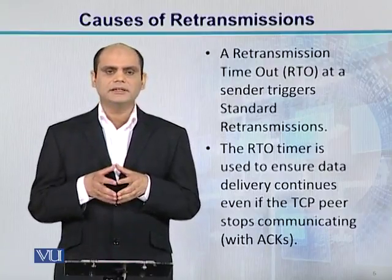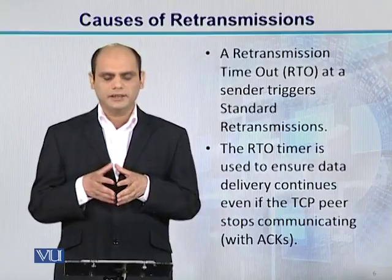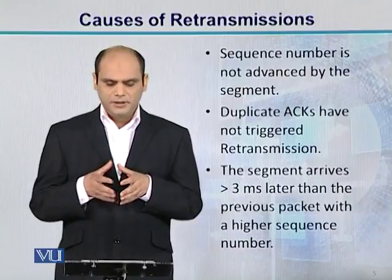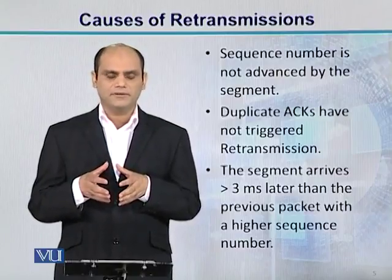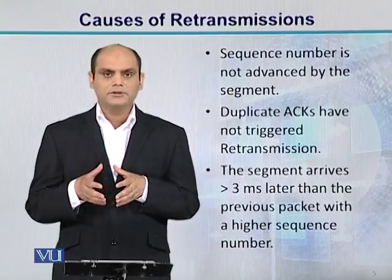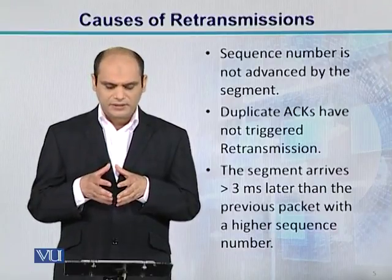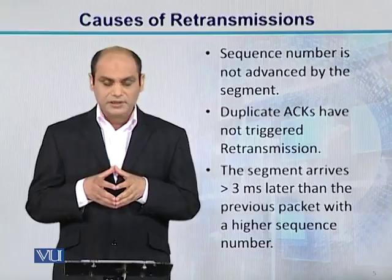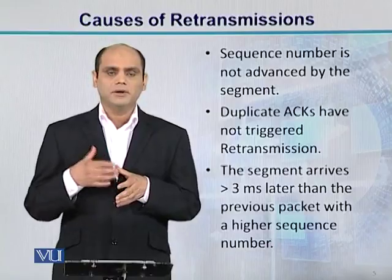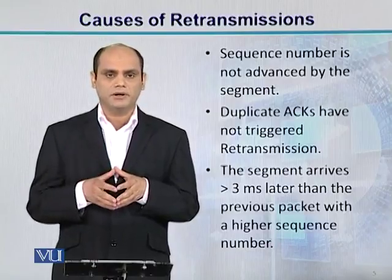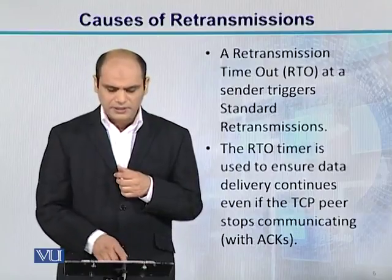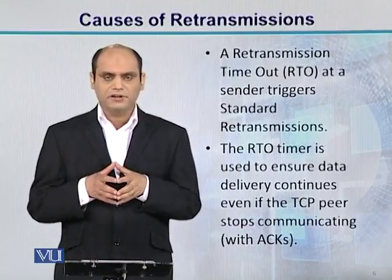Doosri condition kya ho sakti hai: jo hamara sequence number hai, it is not advanced by the segment. Duplicate ACKs have not triggered the retransmission. Jo segment arrives greater than 3 milliseconds later than the previous packet with the highest sequence number — jo highest sequence number hai, woh 3 milliseconds se beyond mujhe mil raha hai. Toh is tarah ki conditions agar meet ho rahi hain, toh usko retransmission kehte hain.